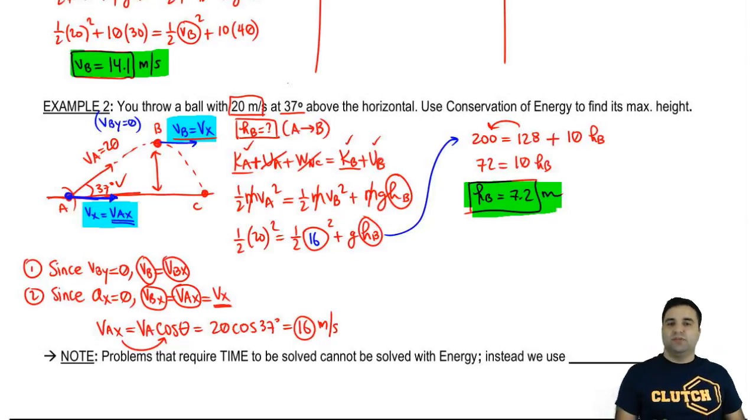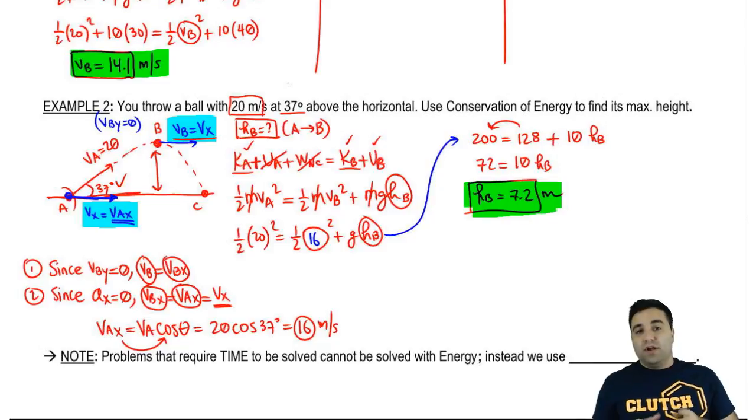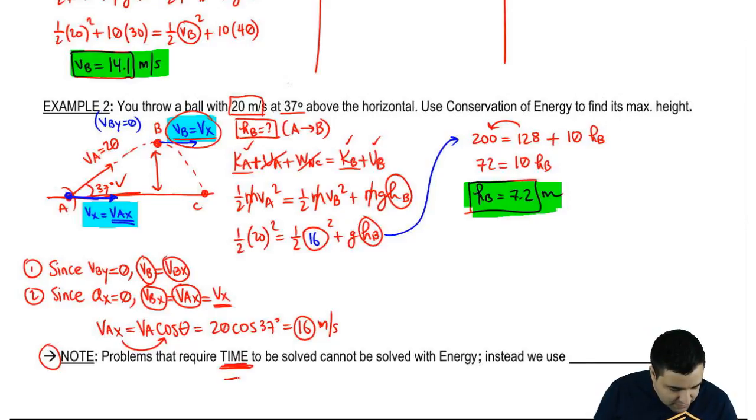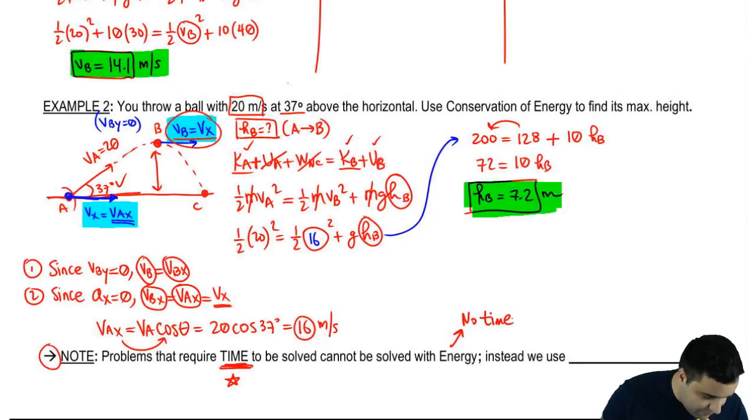Again, energy equation got a little weird because we didn't have one of the pieces of information. And sometimes you're going to get these questions with projectile motion where you're going to have almost everything, but then you're going to have to decompose an angle to figure something out. And the key thing here to remember was the fact that your VB at the highest point will always just be your VX, and you can get VX from VA. So, it says here, one last point, not really related to this question, but just to these types of problems, that problems that require time, notice that neither one of these problems that we've solved require time, but problems that require time to be solved cannot be solved with the energy equation. And that's because the energy equation has no time. It has no reference to time. There's no T variable anywhere.